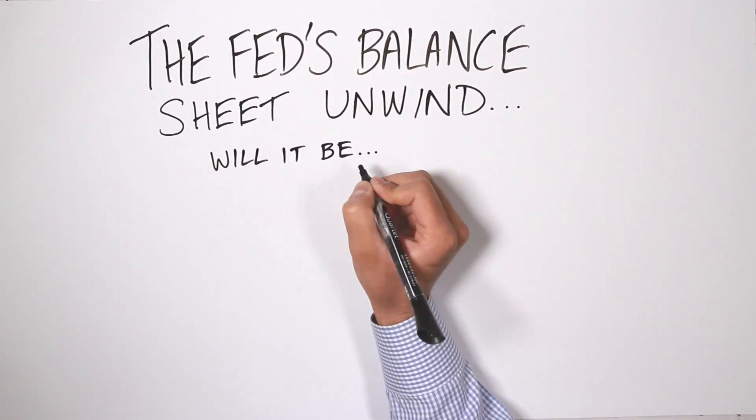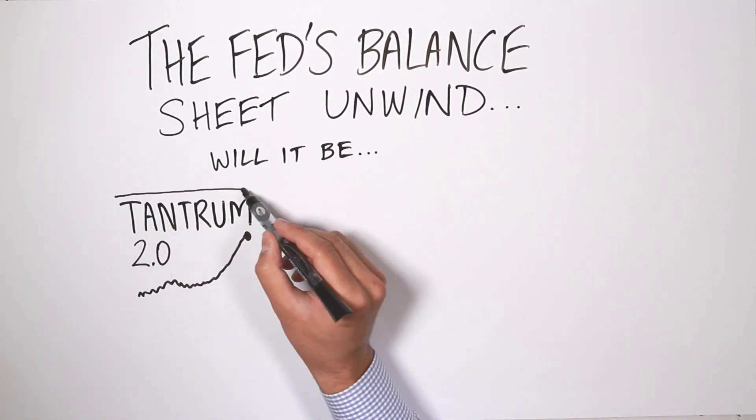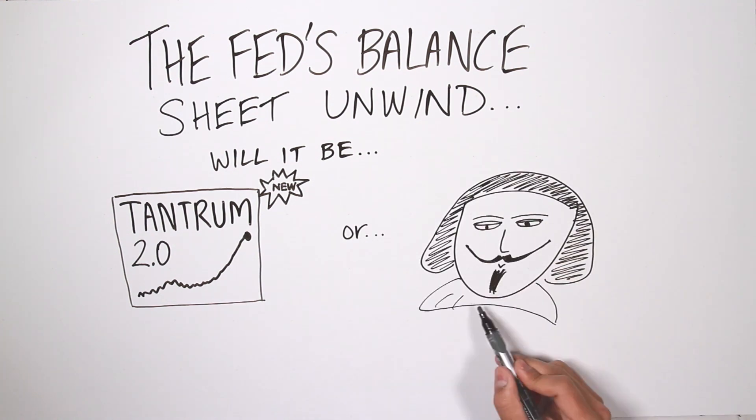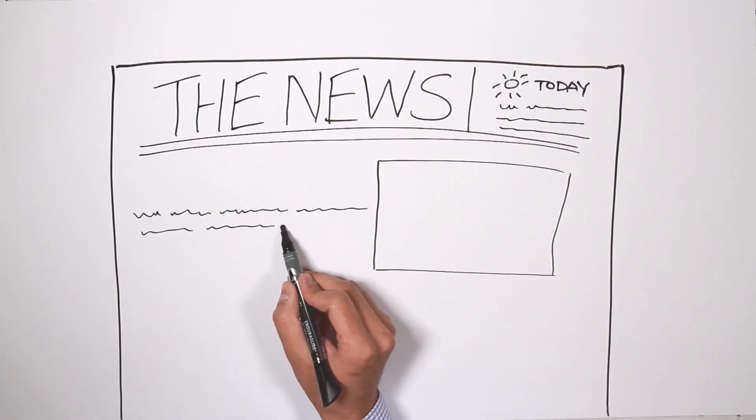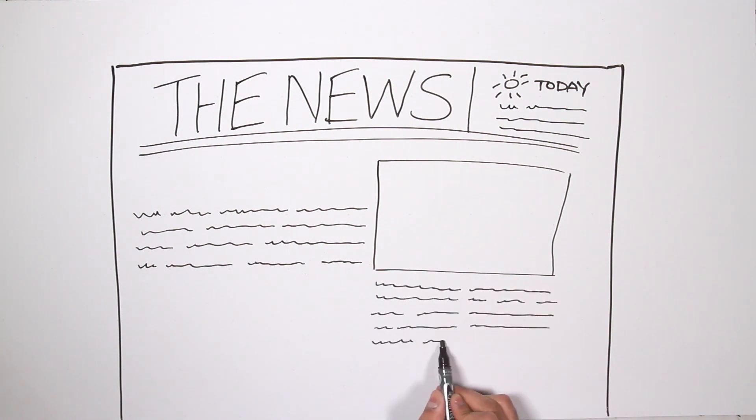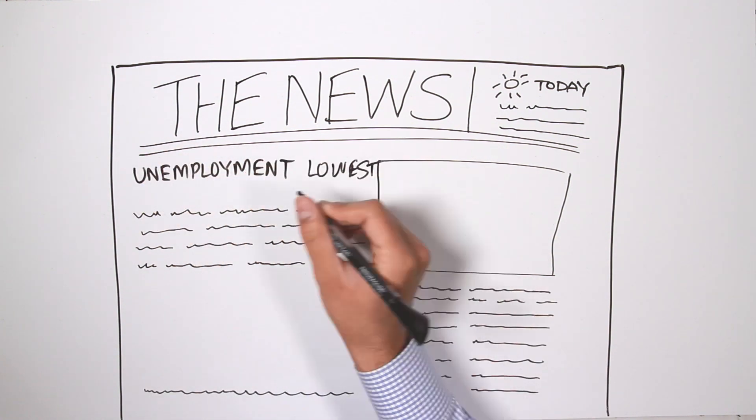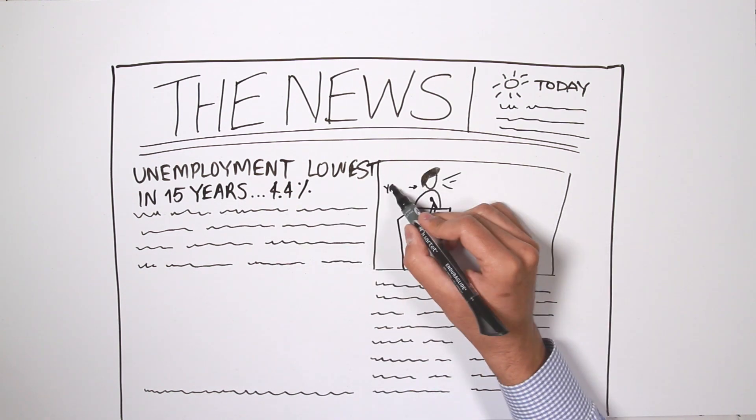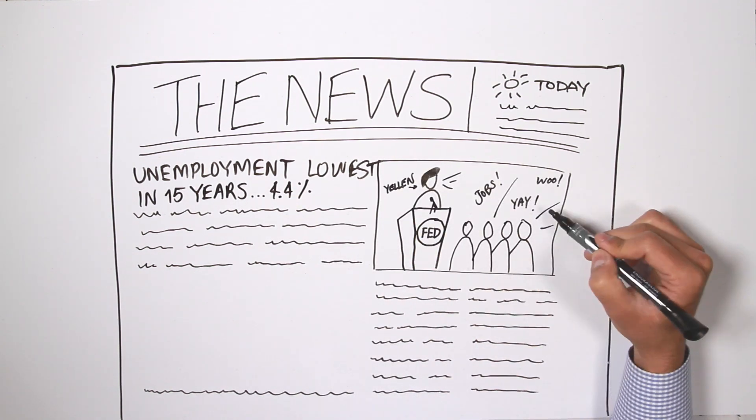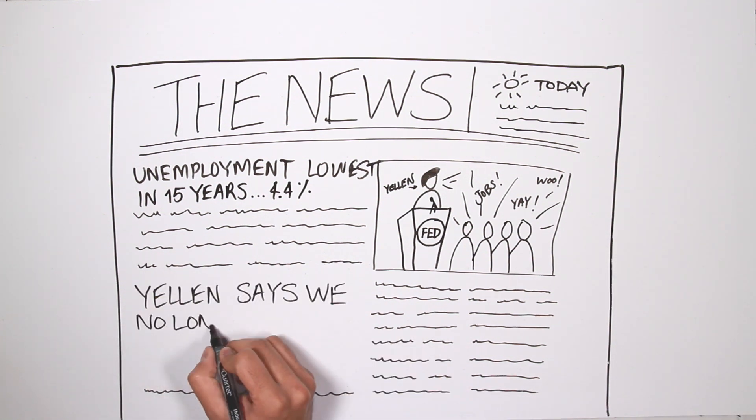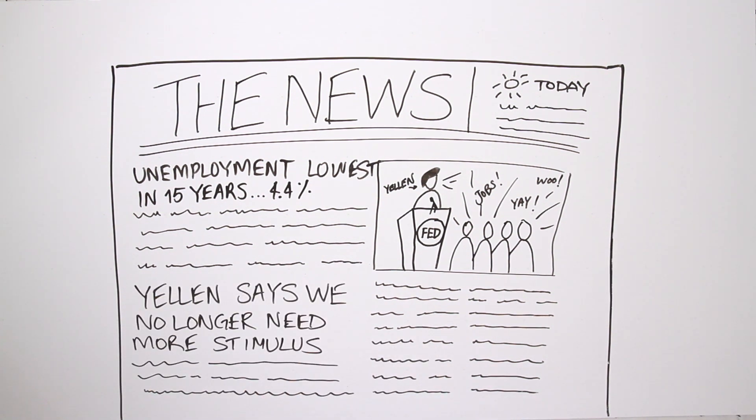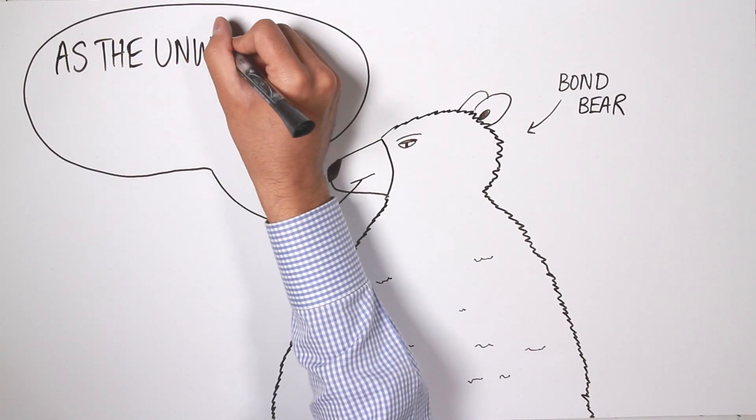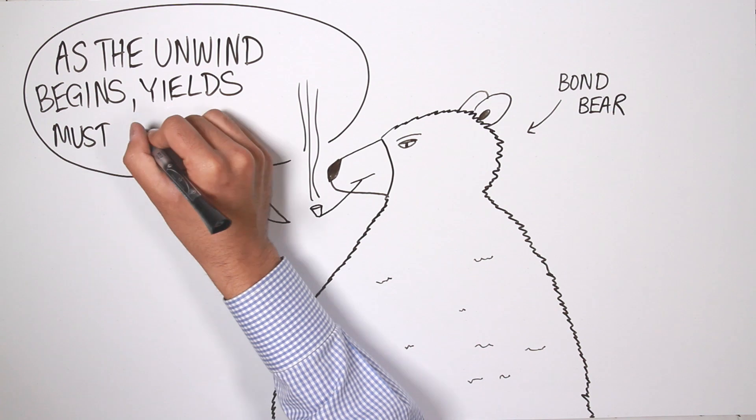The Fed's balance sheet unwind. Will it be taper tantrum 2.0 or much ado about nothing? Well, if you've been paying attention to the news, you know that the unemployment rate in the U.S. is now at a 15-year low at 4.4%.